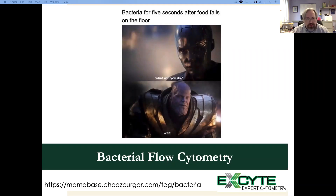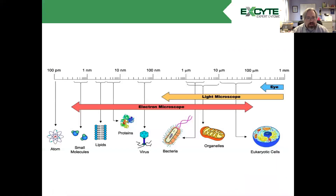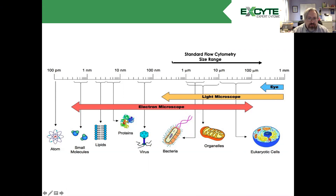Hello, and welcome to today's teaching point on bacterial flow cytometry. If we take a look at the arrangement of size from the atom to the eukaryotic cell, we can see the range from 1 millimeter down to 100 picometers. These are different ways we can observe these objects. Flow cytometry has a standard range from about 0.3 up to over 100 microns, limited predominantly by the nozzle being used on the system.